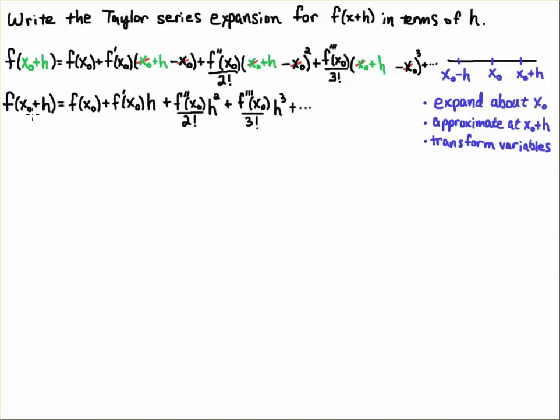So f of x naught plus h, at which we've done our approximation, is equal to f of x naught plus f prime of x naught times h plus f double prime of x naught over two factorial times h squared, and so on, for the cubic term, the quartic term, the quintic term, and so on and so forth.